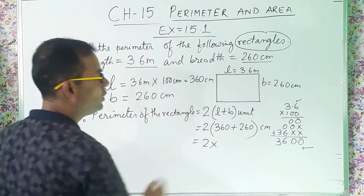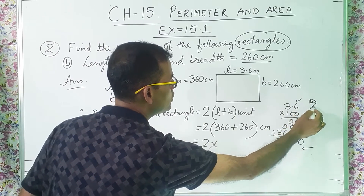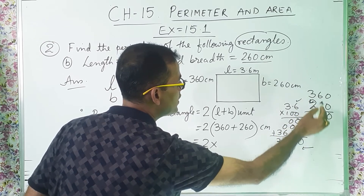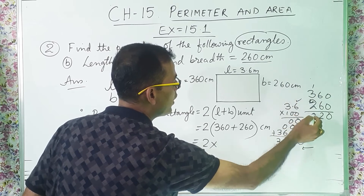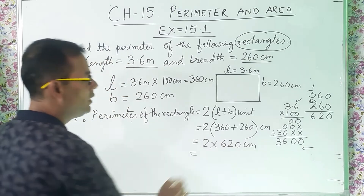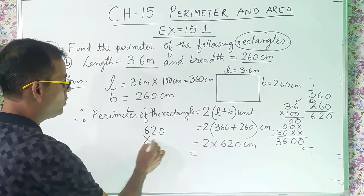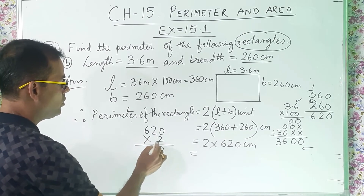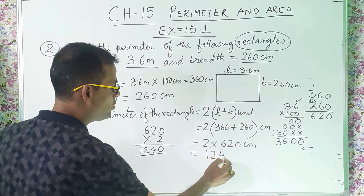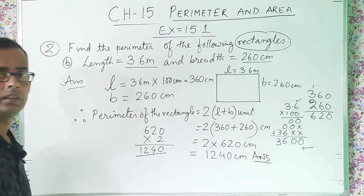Now I will find the perimeter. Perimeter of the rectangle is equal to 2 into (length plus breadth) unit. So 2 into (360 plus 260) centimeters. Adding 360 and 260 gives 620 centimeters. Multiplying 620 by 2: 2 times 0 is 0, 2 times 2 is 4, 2 times 6 is 12 — giving 1240 centimeters. This is the answer.